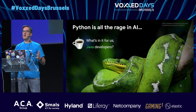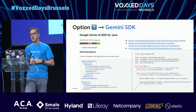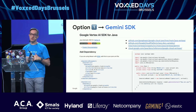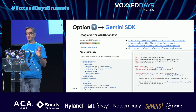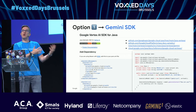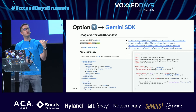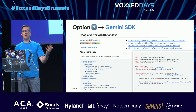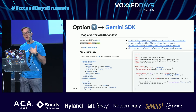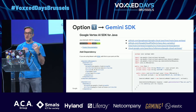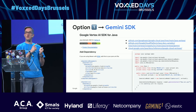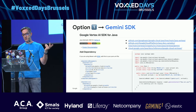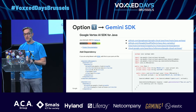I really wanted to do everything with LLMs but in Java. There are actually three options: option zero is using the REST API with any framework you like; there's also the Gemini Java SDK; or LangChain4J.